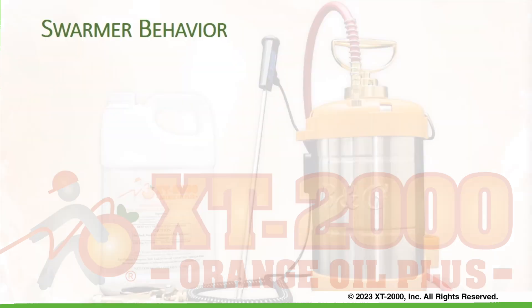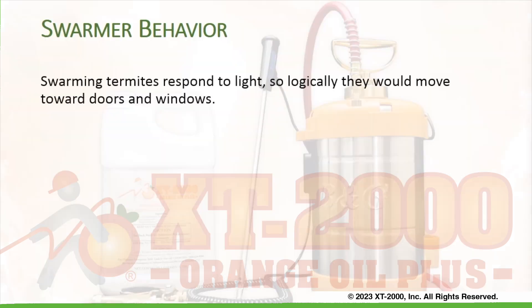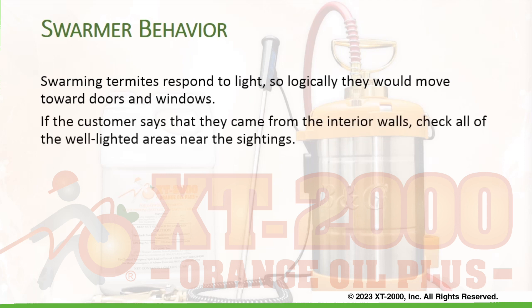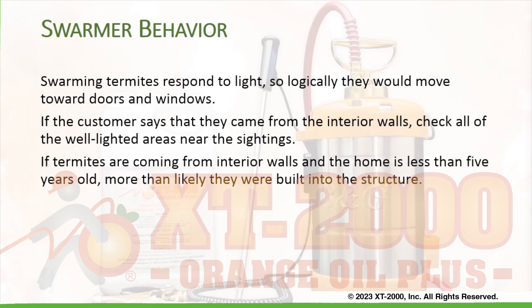Swarmer behavior: Swarming termites respond to light, so logically they would move toward doors and windows. If a customer says that they came from interior walls, check all of the well-lighted areas near the sidings. If termites are coming from interior walls and the home is less than five years old, more than likely they were built into the structure.